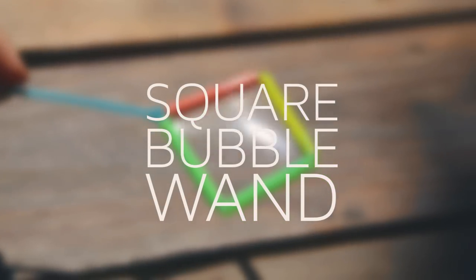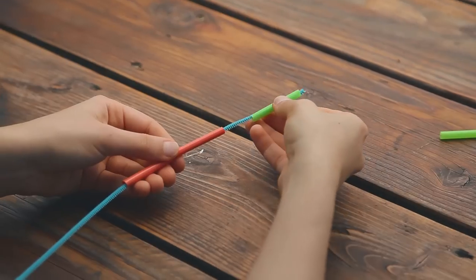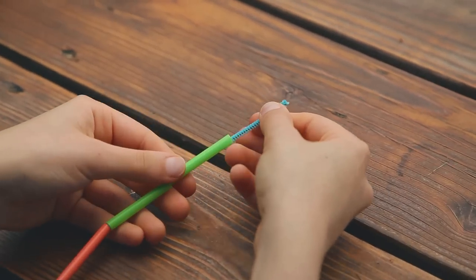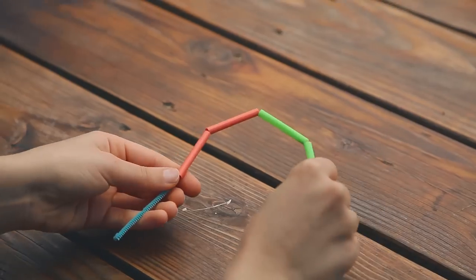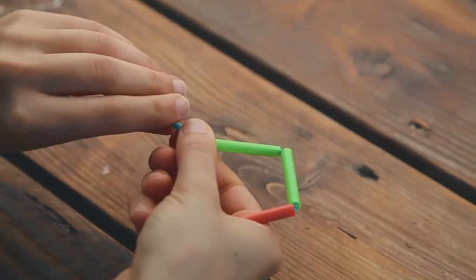For the square bubble wand, just slide on four straw pieces onto a pipe cleaner. Make sure to leave an inch on the end. Bend the pipe cleaner into a square shape, then twist the end.